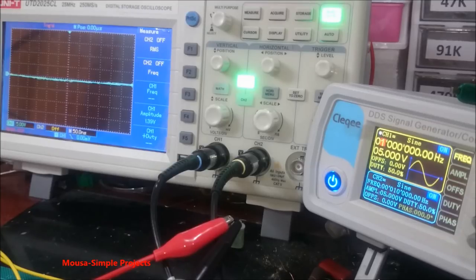Set the function generator voltage to 5 volts peak-to-peak and start increasing the frequency.